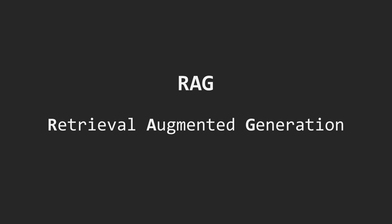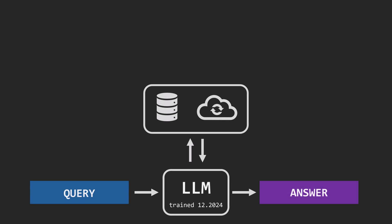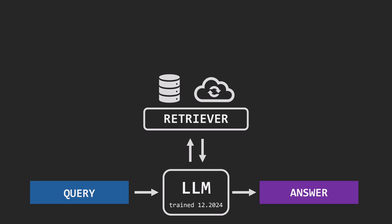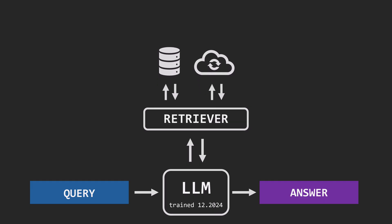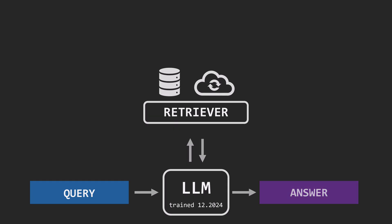And that's where RAG comes in. Introduced in 2020 by researchers from Facebook AI Research, RAG combines the strengths of retrieval systems and language models. The core idea is simple: use a retriever to search external sources for relevant information, and then use a generator — the language model — to craft a response based on that data.